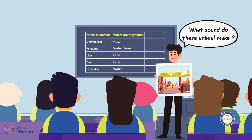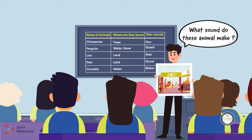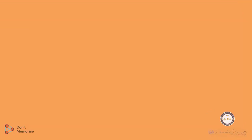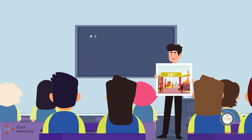As the students are responding, we will simultaneously write it on the board in a tabular format as shown. Once we've collected all the information, we will form sentences by matching the name of the animal to the place where they are found and the sound they make. For example, we will say: chimpanzees are found on trees and they make the 'who' sound.